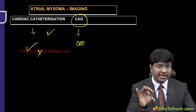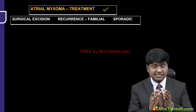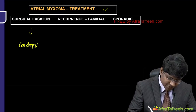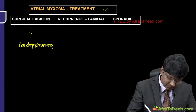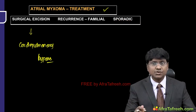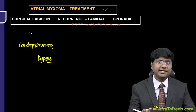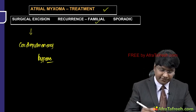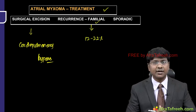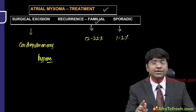Treatment of atrial myxoma: surgical excision using cardiopulmonary bypass is the best method of treatment, regardless of size. The chance of recurrence is 12 to 22 percent for familial tumors (Carney complex), and only 1 to 2 percent for sporadic tumors. Tumor recurrence most likely results from multifocal lesions in familial cases; in sporadic cases, recurrence is due to incomplete resection.